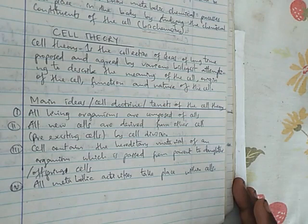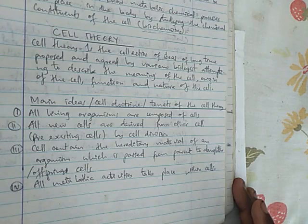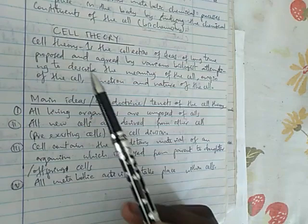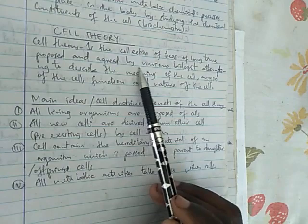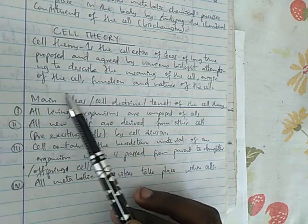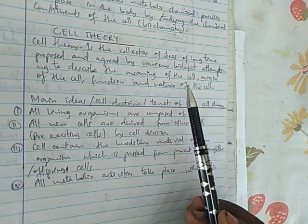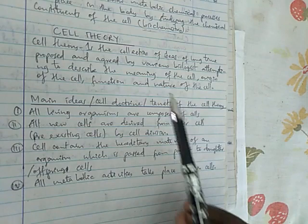Now every part of these topics they have questions in the exam so you must be very careful understanding them well. Cell theory by definition is the collection of ideas of long-term proposed and agreed by various biologists attempting to describe the meaning of the cell, origin of the cell, function and nature of the cell. So all of the cell theory they explain about meaning, origin of the cell, function and nature.